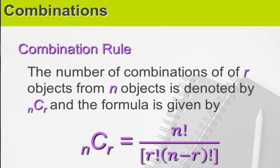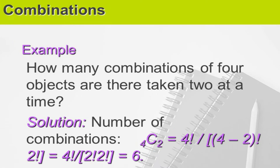For example, how many combinations of four objects are there taken two at a time? The solution: the number of combinations is C(4,2), which equals 4 factorial over (4 minus 2) factorial multiplied by 2 factorial. So the answer is equal to 6.